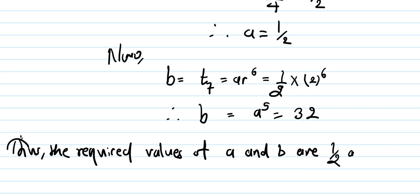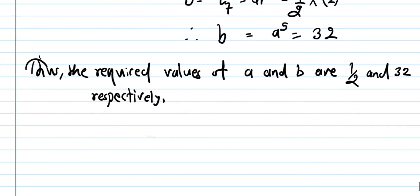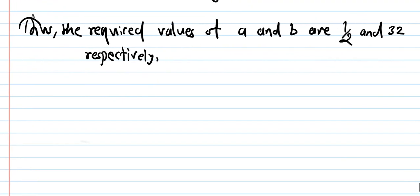Therefore a = 1/2 and b = a·r^5, giving the required values of a and b respectively.